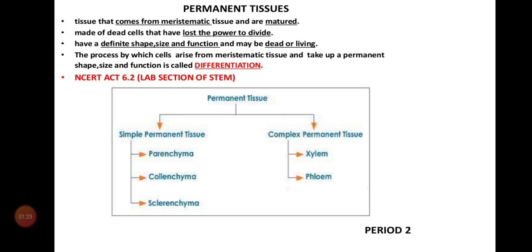The second point: made of dead cells that have lost their power to divide. Once it becomes a permanent tissue, it will lose its dividing capacity, and once it loses its dividing capacity, we call that cell a dead cell. When it possesses the dividing capacity, we call it a living cell. But once it loses its dividing capacity, we call it a dead cell. Permanent tissues have lost the power to divide.